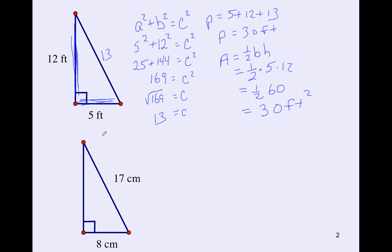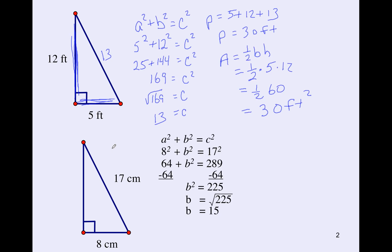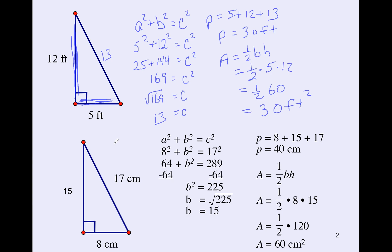Try our second problem here — hit pause and see if you can solve it. Welcome back. Here is the solution to that problem. First thing we have to do is find the missing side using the Pythagorean theorem. The third side is going to be 15, then we use the perimeter formula and area formula. So the perimeter is 40 centimeters and the area is 60 centimeters squared.